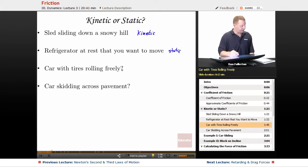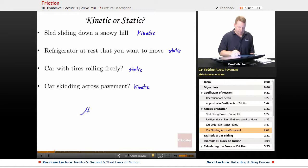Car with tires rolling freely. That's static because it's not sliding. As the tires are going down off the pavement, at any given point, they are static with respect to the pavement. Now, if you happen to skid across the pavement, now you have sliding or kinetic friction. And when you're using that coefficient of friction, you will use either the kinetic mu k or the static mu s coefficient.